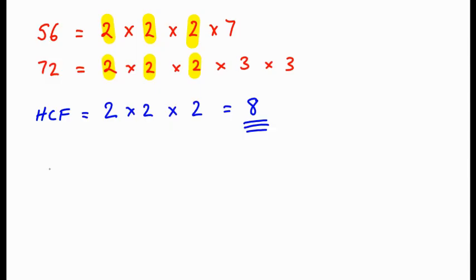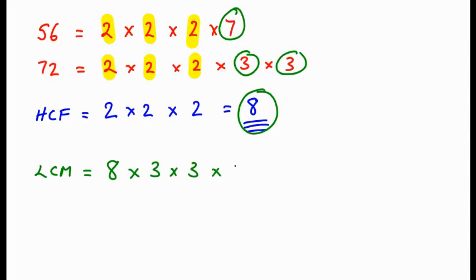Now I can work out lowest common multiple. The reason we did highest common factor first is that I use this answer as my starting point. Then I times it by whatever is left. So there's a 7, a 3, and a 3.